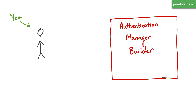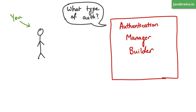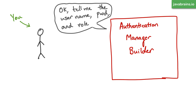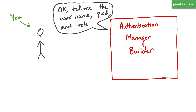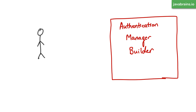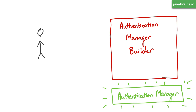When dealing with AuthenticationManagerBuilder, the first thing it asks is what type of authentication you want. You say you want in-memory authentication. Then the authentication manager asks you to tell it the username, password, and role of your in-memory users. You give it the user information — it could be one user or multiple users. Once you've configured the AuthenticationManagerBuilder with these properties, a new authentication manager is created with the values you want. So you're dealing with the builder, not the authentication manager directly.